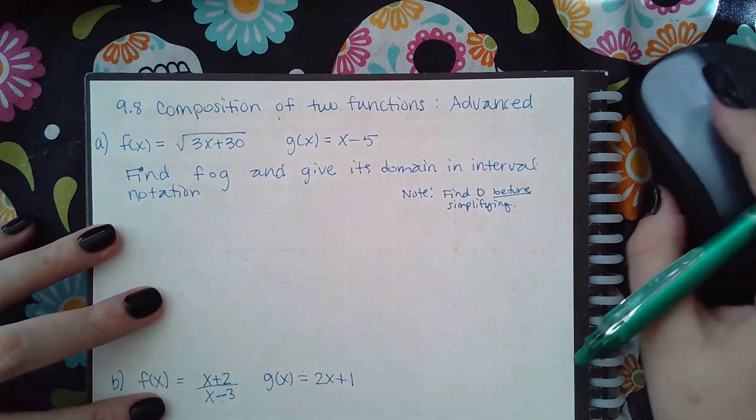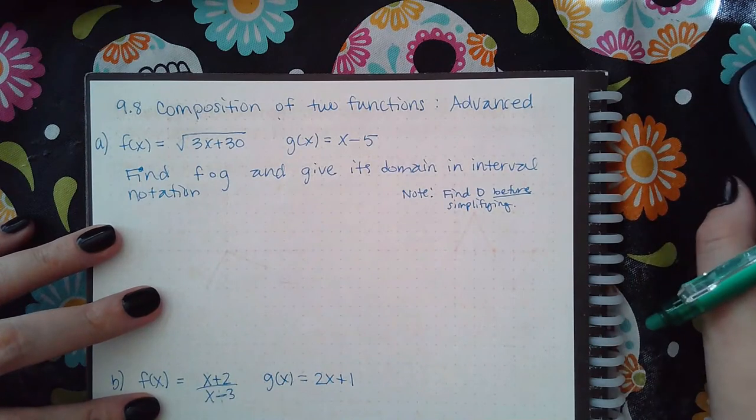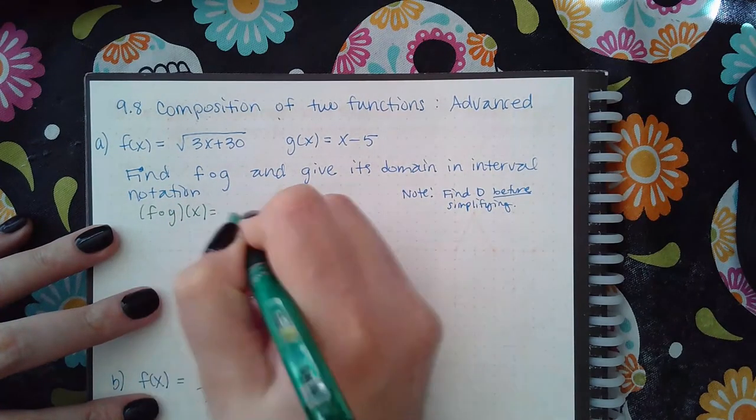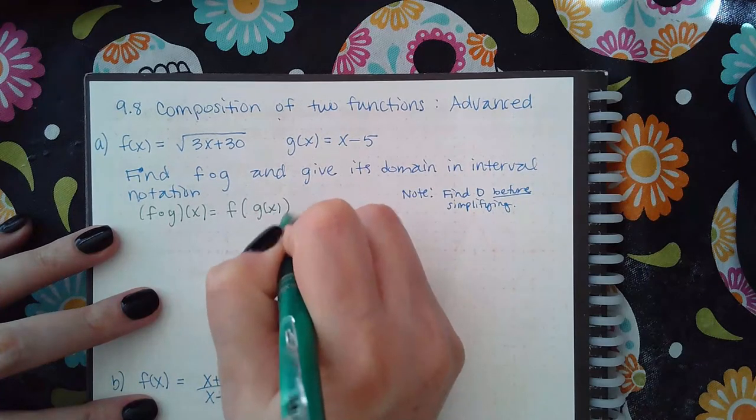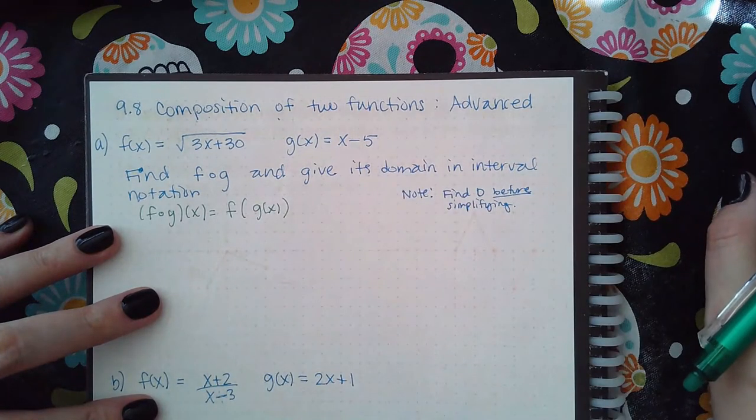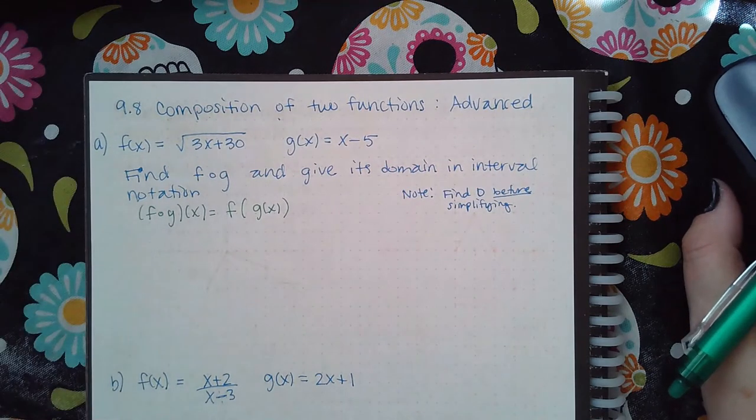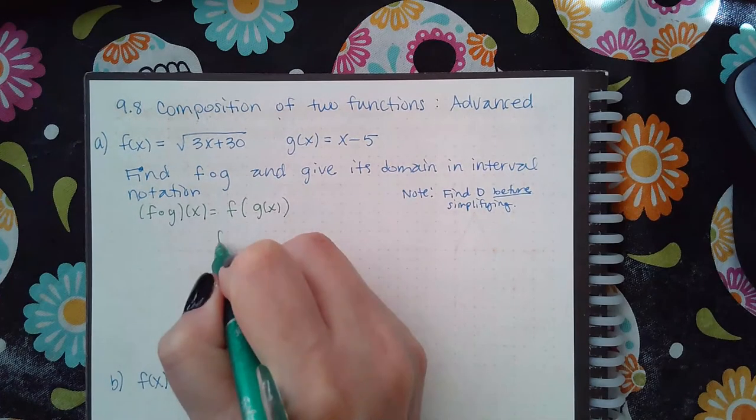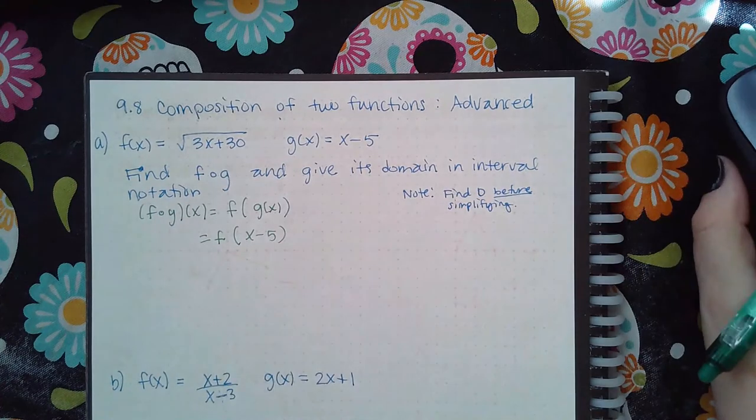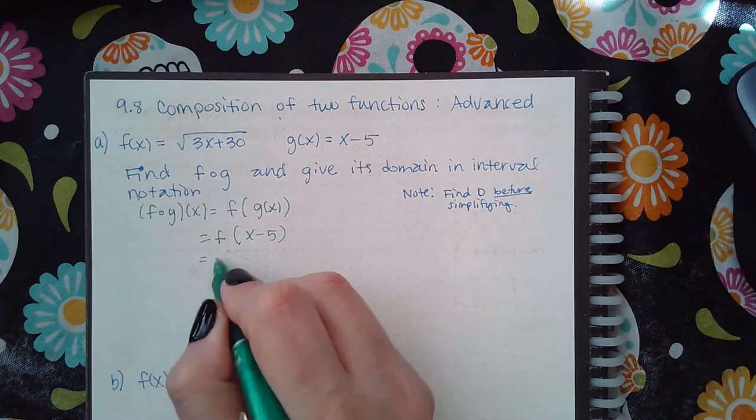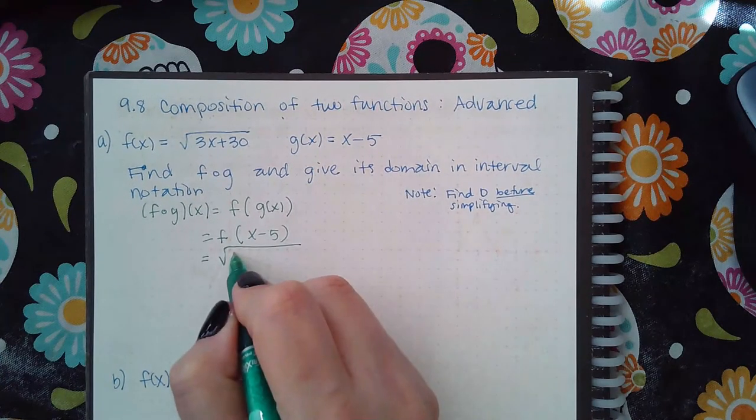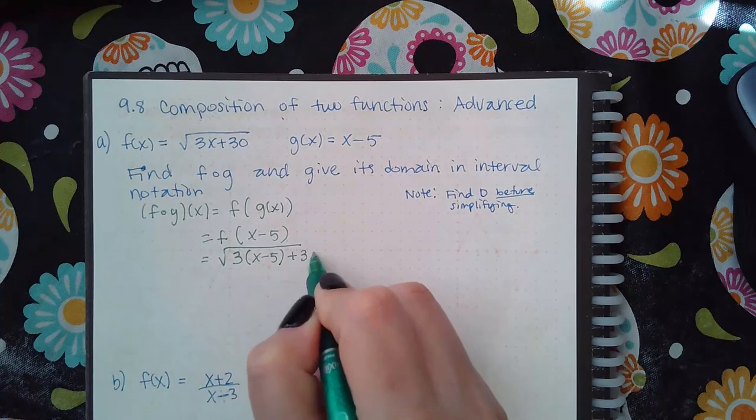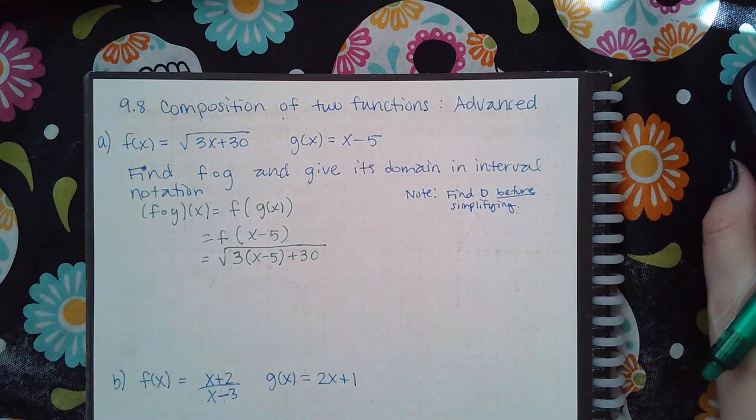So f of g means f of g of x. In this case we have f of x minus 5, and so then we end up with this square root of 3 times x minus 5 plus 30. Now I just want to make sure of something.